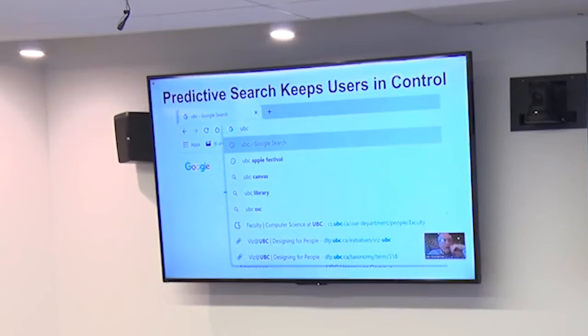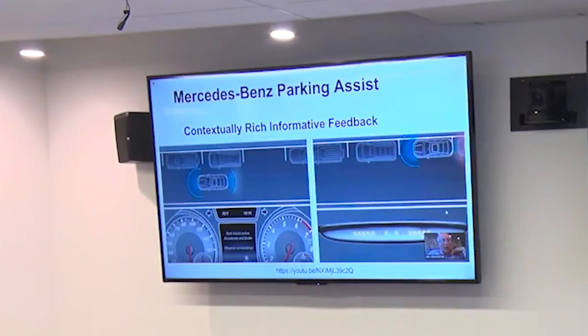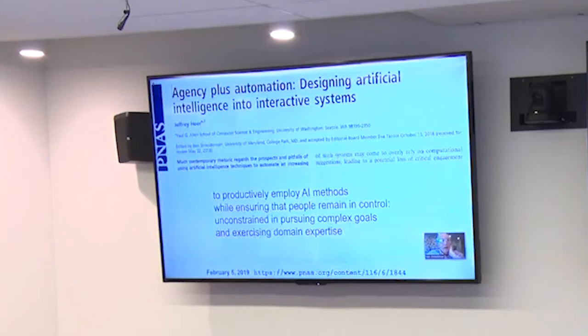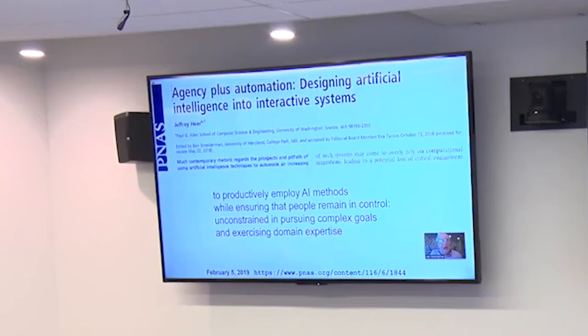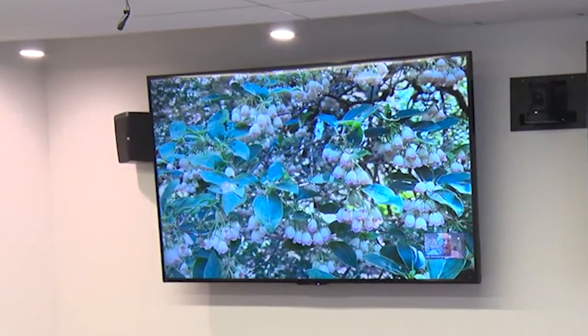Some examples: predictive search keeps users in control when designed well — typing gives a series of choices that guide you. Mercedes-Benz Parking Assist and Toyota both provide the right kind of textually rich, informative feedback showing where you are, giving you a path, moving along, and allowing you to stop it at any time with full information about what's happening. Jeff Heer's article about providing agency and automation describes three examples where the goal is to productively employ AI methods while ensuring people remain in control, unconstrained in pursuing their goals.